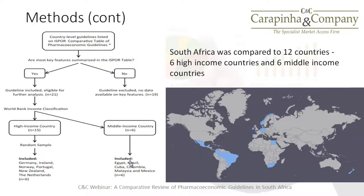We applied a flowchart to identify a group of middle-income countries as the next best comparator for an emerging market. These included Egypt, Brazil, Colombia, Cuba, Malaysia, and Mexico. For high-income countries, there were 15 eligible; we selected a random sample of six: Germany, Ireland, Norway, Portugal, New Zealand, and the Netherlands. The distribution spans Latin America, Africa, Europe, and Southeast Asia. To my knowledge, this is the first comparative review comparing South Africa to these 12 other countries.